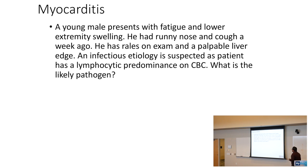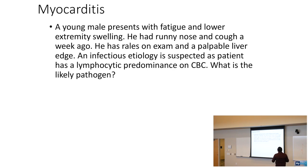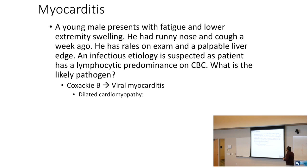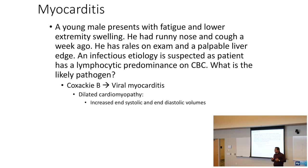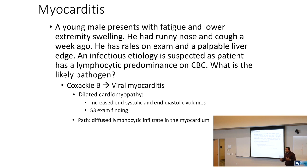A young male with fatigue, lower extremity swelling, recent URI, rales on exam, and palpable liver edge has a lymphocytic predominance on CBC suggesting a viral etiology. The likely pathogen is Coxsackie B, which causes viral myocarditis and dilated cardiomyopathy with increased end-systolic and end-diastolic volumes. Watch for S3 gallop on physical exam.